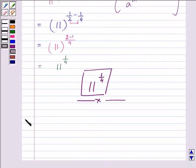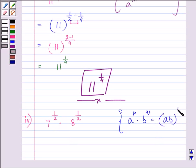Proceeding on with the last and final part, we have 7 to the power 1 by 2 getting multiplied by 8 to the power 1 by 2. Now here, the bases are not same, but the exponents are same. So we can write it as one of the properties says: a to the power p multiplied by b to the power p, then we can multiply the bases and have a common exponent.